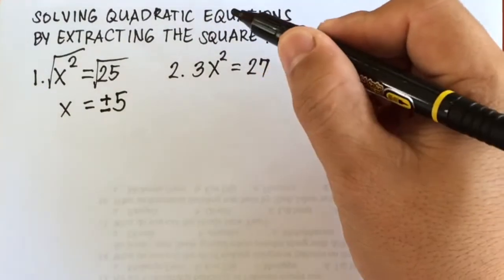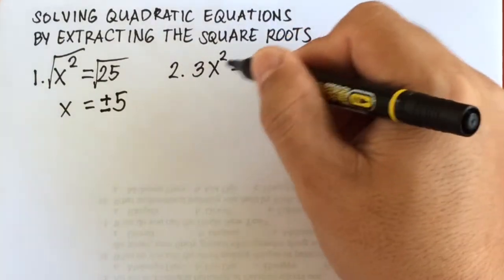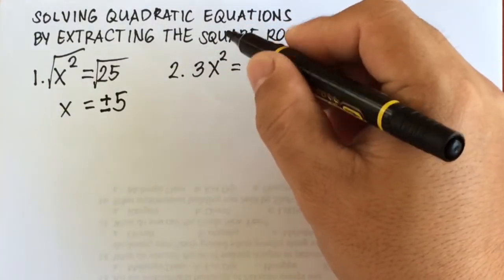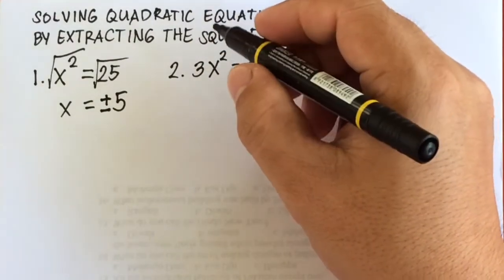And number 2, now in here, you have 3x squared equals 27. What we're going to do is divide the left side and the right side by 3, the numerical coefficient of x squared.